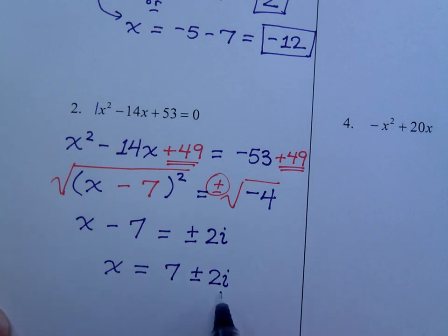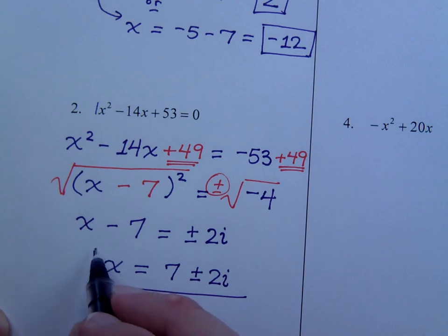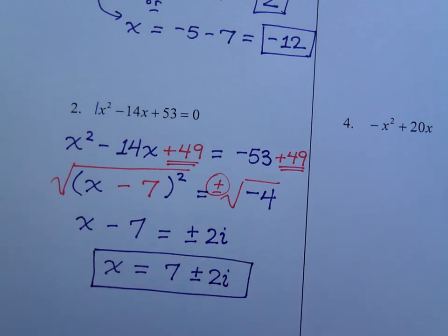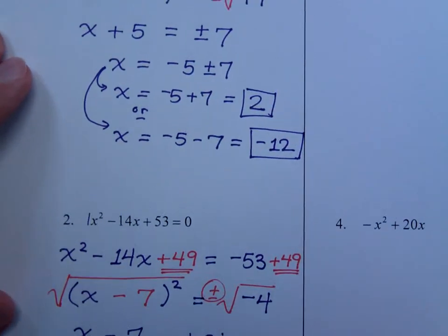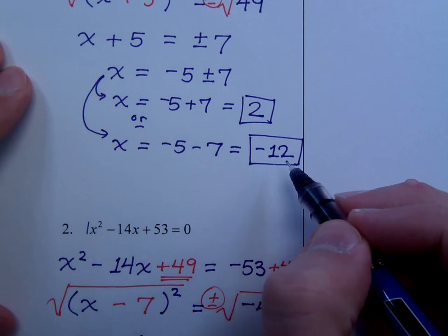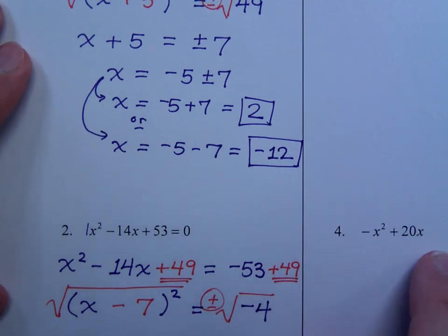Now, when you see these solutions right here, things that are imaginary or radical, you're not going to get that from factoring. If you look at the last example that we did, I got 2 and negative 12. I could get those from factoring. And, in fact, if you were to take this original problem right here...